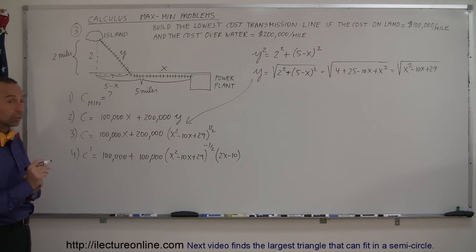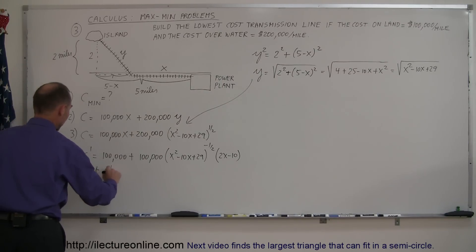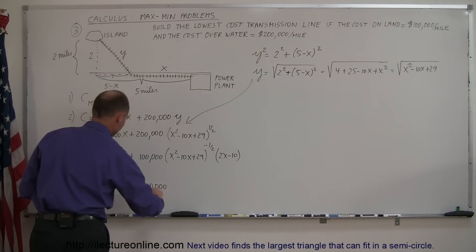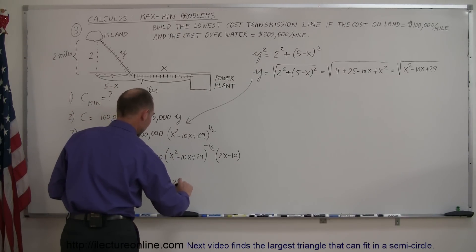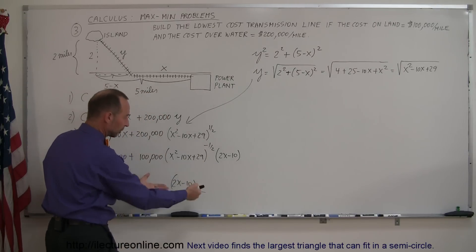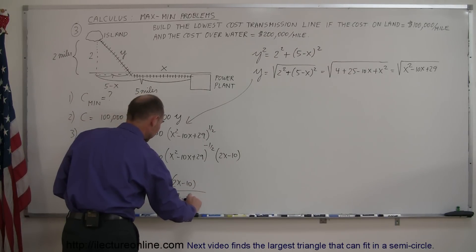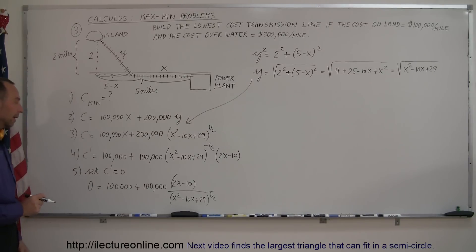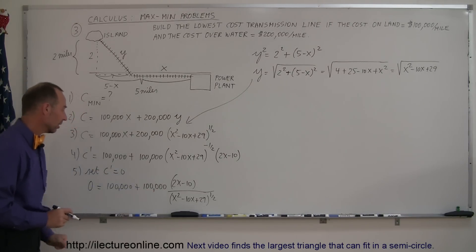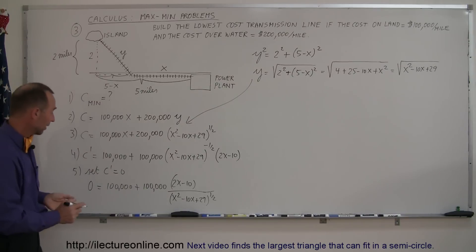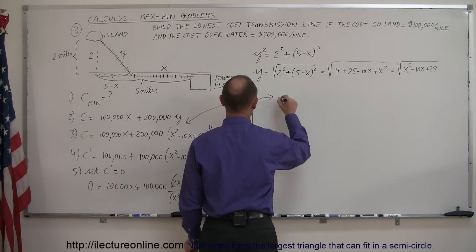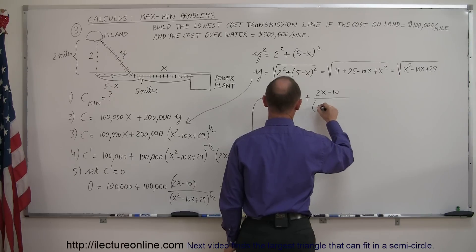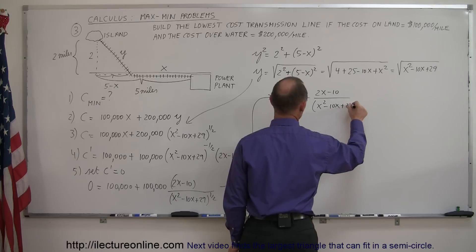Step five: set C prime equal to zero. So 0 equals 100,000 plus 100,000 times (2x − 10) divided by (x² − 10x + 29) to the one-half power. Since every term has 100,000 in it, divide both sides by 100,000 to simplify. We get 0 equals 1 plus (2x − 10) divided by (x² − 10x + 29) to the one-half power.